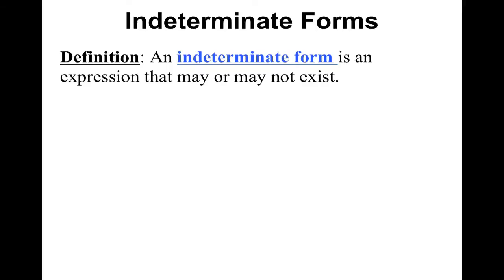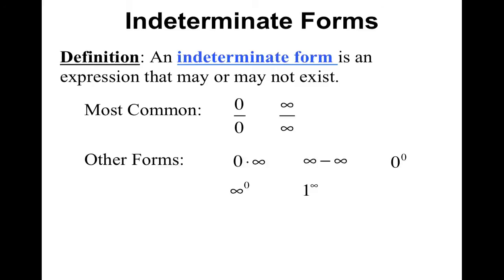An indeterminate form is an expression that may or may not exist — basically, no one's agreed what the value is, so we say that it's indeterminate. The ones you'll see the most are zero over zero and infinity over infinity. Some others you'll see in a few more weeks are zero times infinity, infinity minus infinity, zero to the zero power, infinity to the zero power, or one to the infinite power.